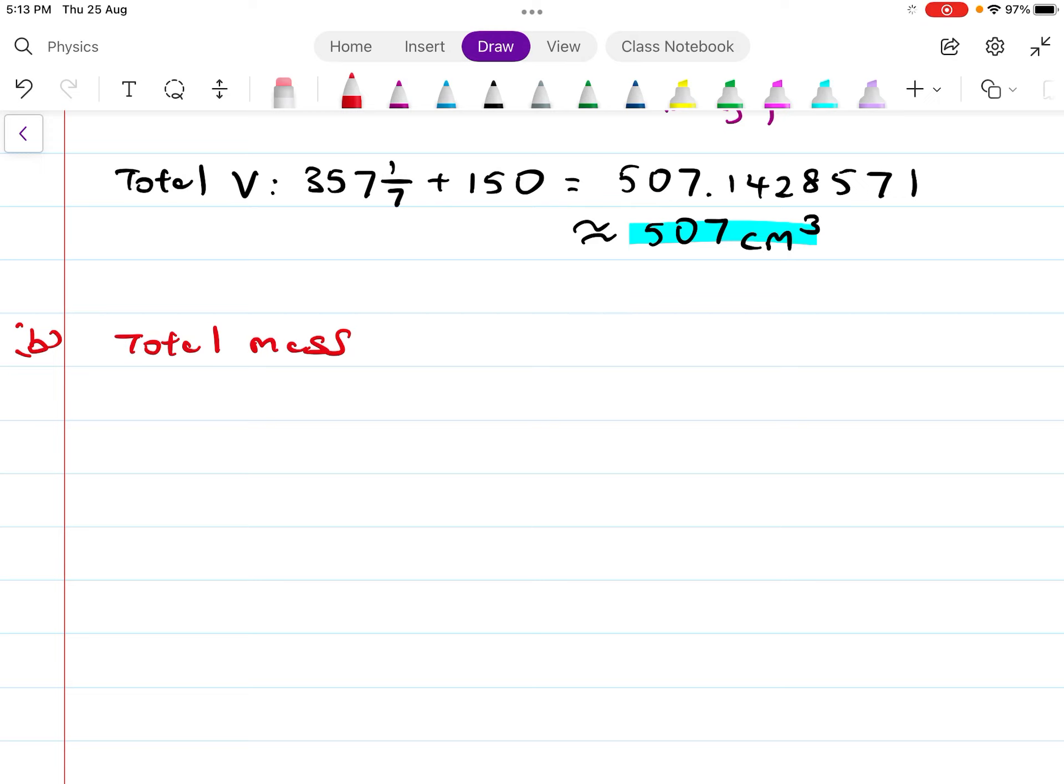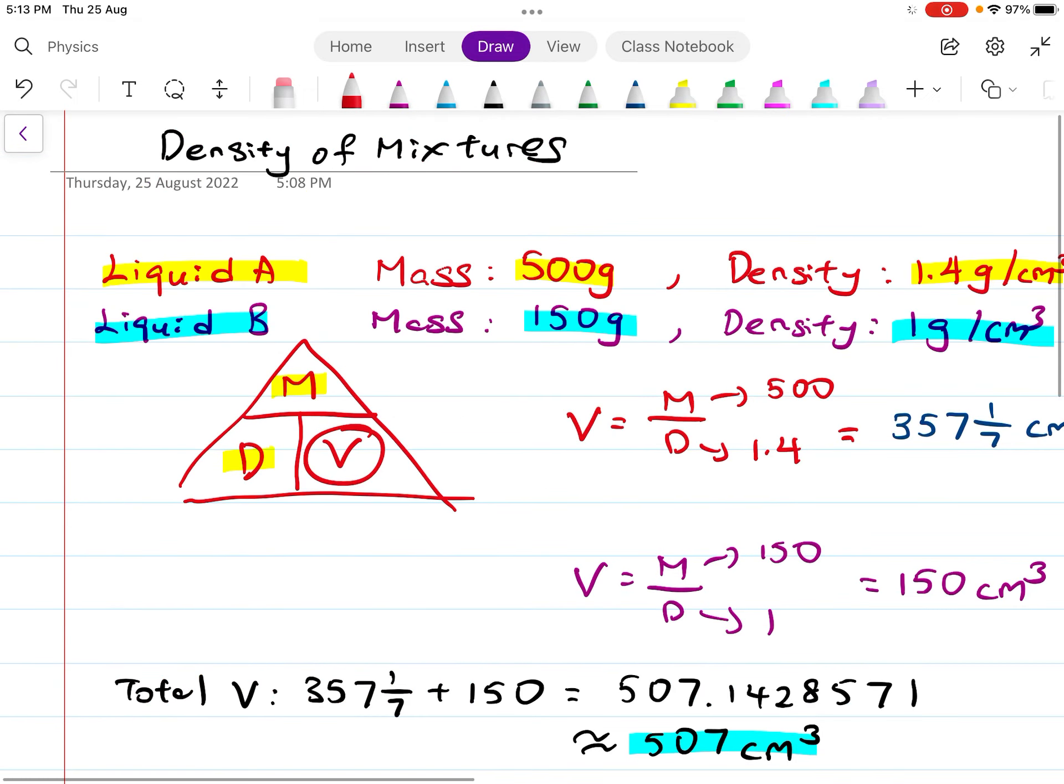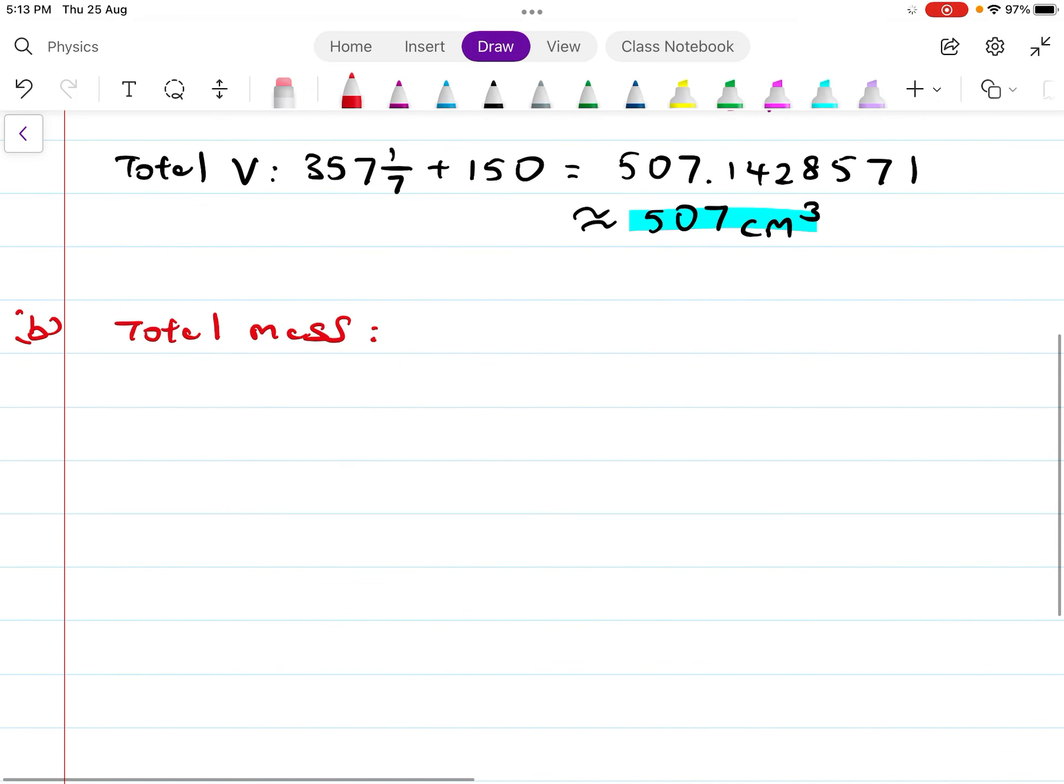So for part B, total mass equals 500 plus 150, which is 650 grams. Divide 650 by 507 to get the density. Density is mass over volume, so mass is 650, volume is 507. This gives roughly 1.28 grams per cm³.